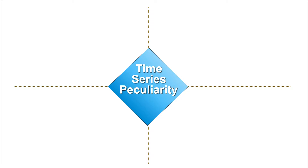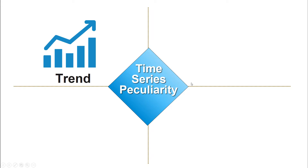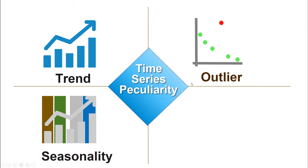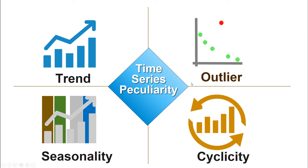Time series data sets are quite different from cross-sectional data, that is, data collected at a point in time. This is because time series data sets have a number of peculiarities, and these include trend, outlier, seasonality, and cyclicity. Each of these peculiarities will be explained in the coming slides.